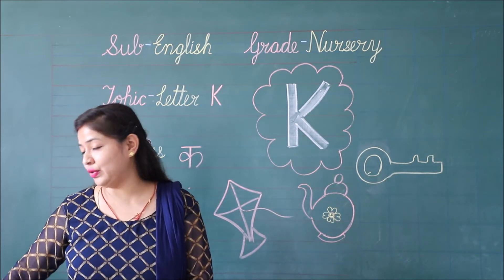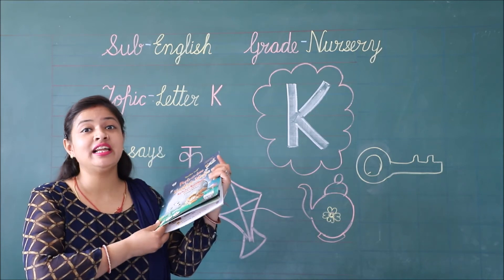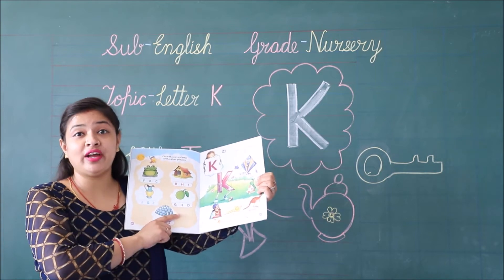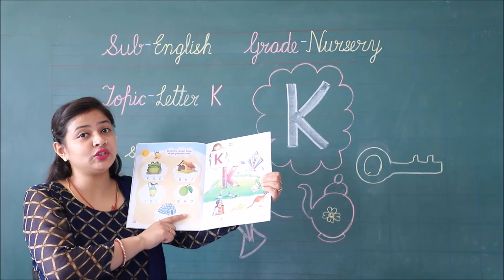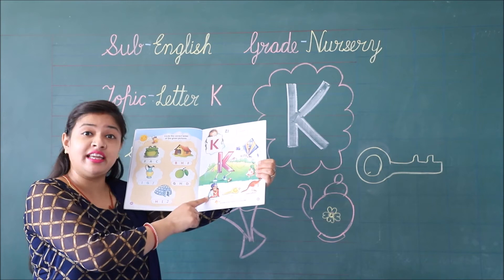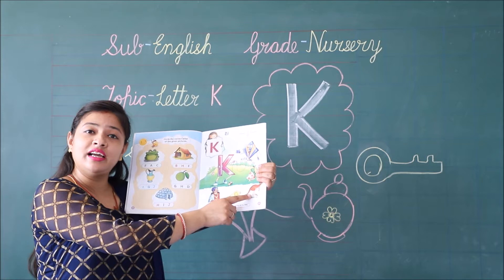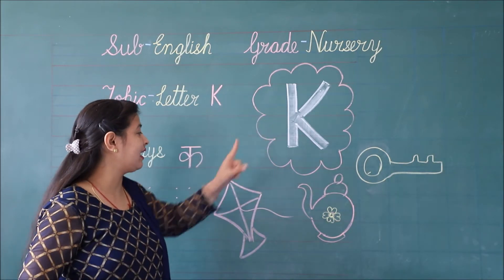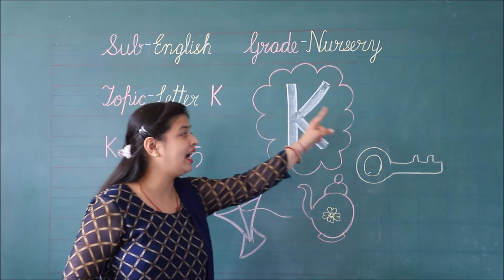Students, this is your English reading book. Let's read letter K on page number 21 and try to learn more words beginning with letter K. K ka kite, K ka king, K ka ki, and K ka kangaroo. K ka kite, K ka katar, and K ka ki.